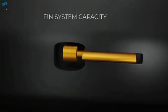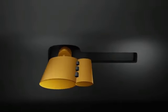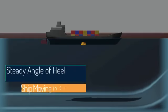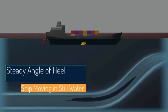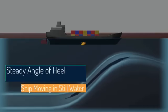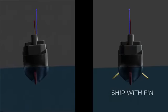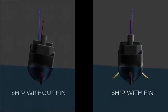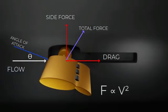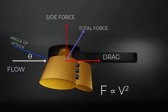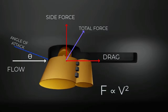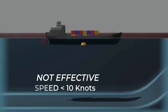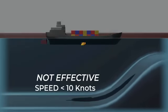The capacity of a fin system is usually expressed in terms of the steady angle of heel it can cause with the ship moving ahead in still water at a given speed. By using active fins, there can be a huge reduction in rolling compared to ships with no active fins. The force on a fin varies in proportion to the square of the ship's speed, whereas the GZ curve of the ship is independent of speed. However, a fin system is not likely to be very effective at speeds below about 10 knots.